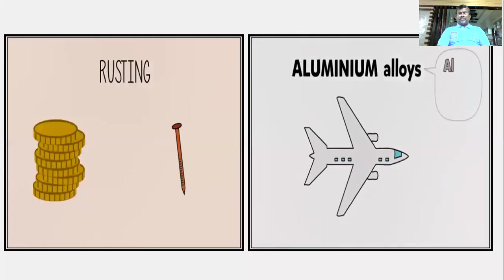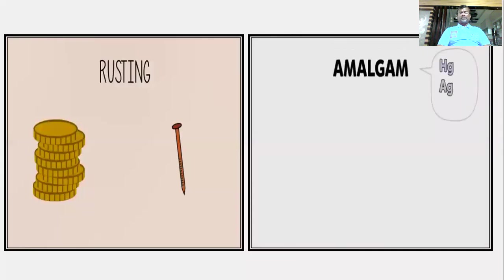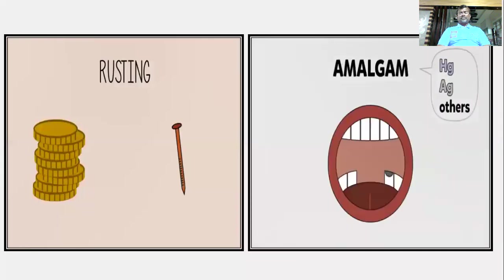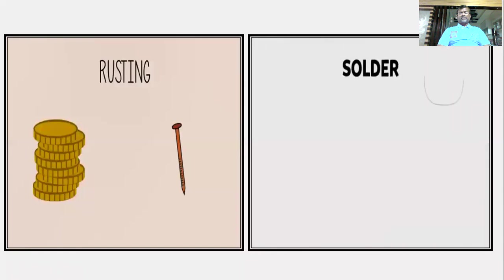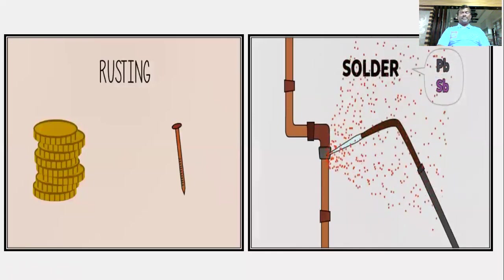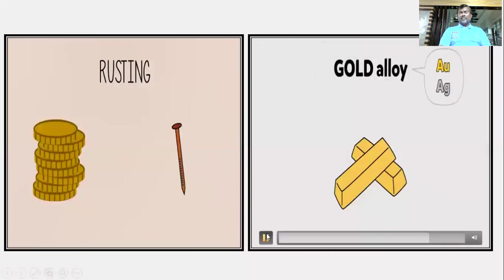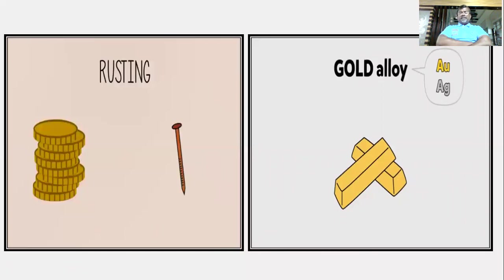Aluminium alloys used in planes contain a few percent copper or other metals. Amalgam is mercury with silver and other metals, once used for dental fillings. Solder is lead and tin used for joining electrical components. Gold is usually an alloy containing another metal such as silver.